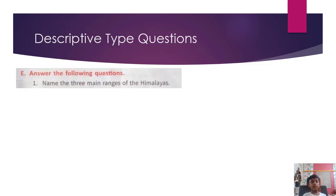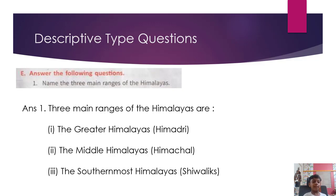Descriptive type questions. Answer the following questions. Name the three main ranges of the Himalayas. Answer: The three main ranges of the Himalayas are the Greater Himalayas (Himadri), the Middle Himalayas (Himachal), and the southernmost Himalayas (Shivaliks).